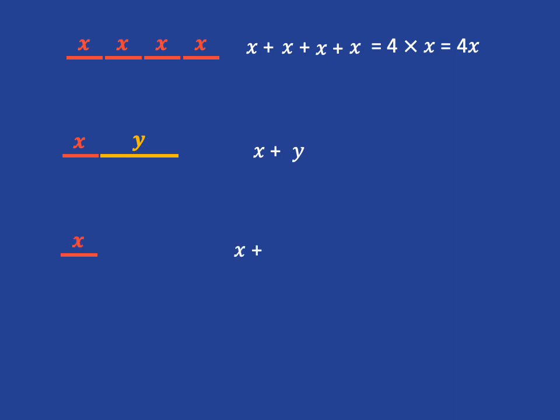If instead we had X plus X plus Y, we do have some like terms there, because we've got two little red lengths, and we can add those two red lengths together. And so we can simplify this to say we've got 2X plus Y. We can't go further than that, because Y is not a like term with X.